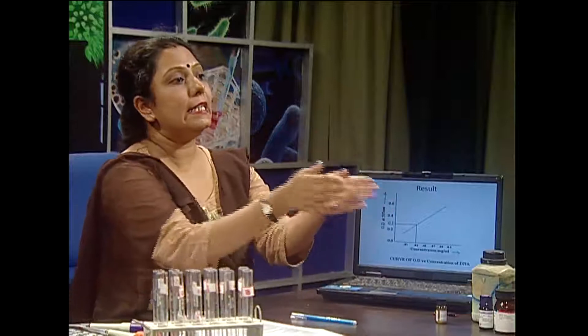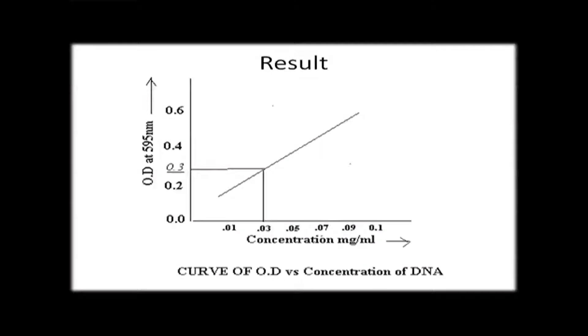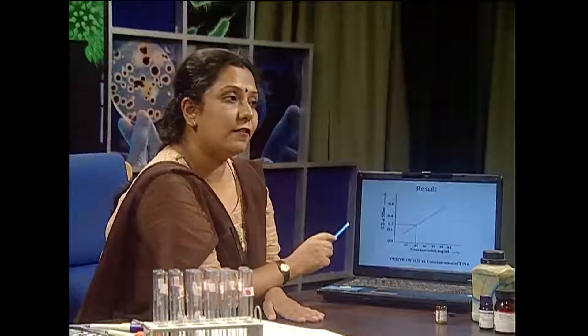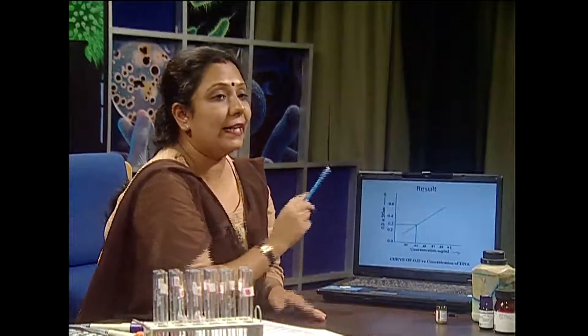By having a series of standards and measuring their optical density, you can construct a standard curve with OD at 595 nanometers versus concentration in milligrams per mL. That constructs a straight line. By putting the OD value of the unknown one and extrapolating, you can calculate the concentration of unknown DNA.